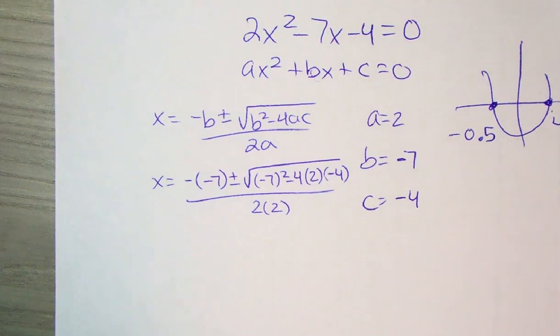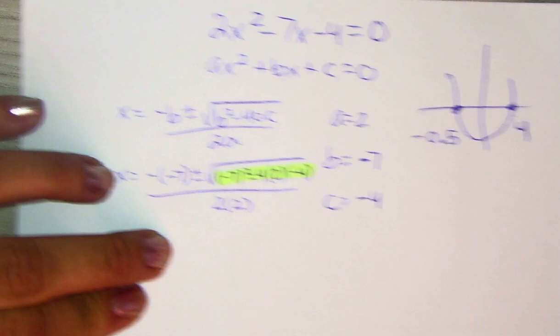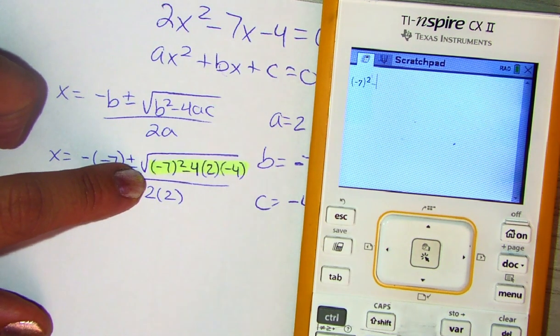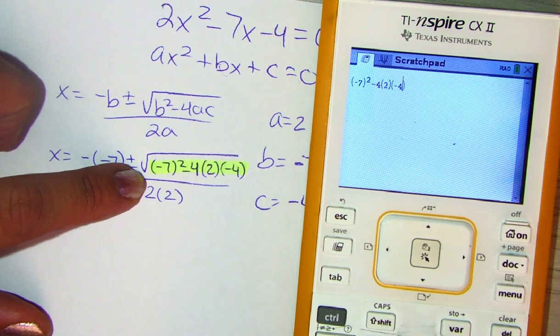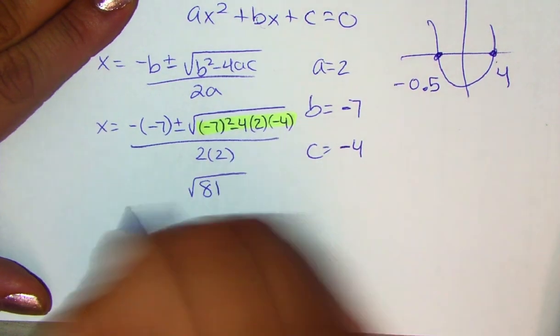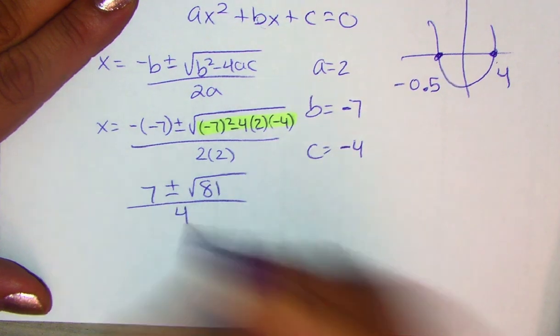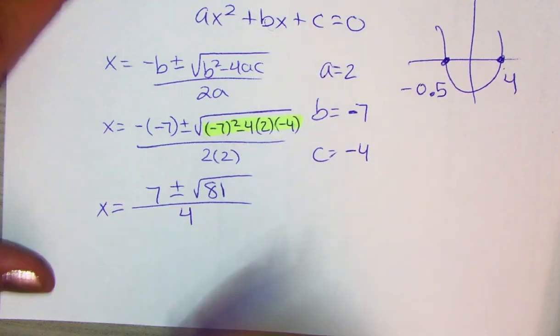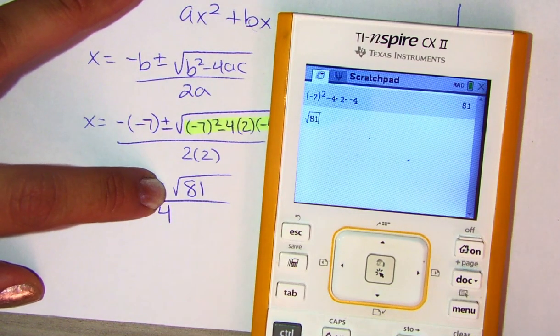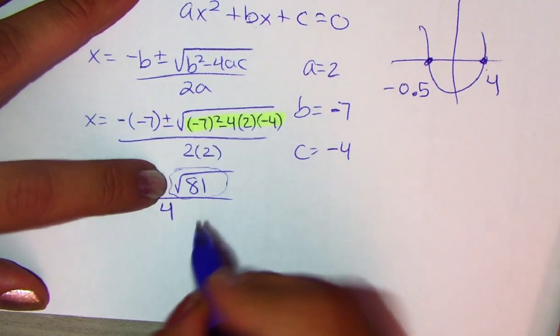And from here, we focus on simplifying that discriminant, b squared minus 4ac. So let's use the calculator for that. We're going to type negative 7 squared minus 4 times 2 times negative 4. And that's 81. So we're going to write the square root of 81, negative times negative is positive, and 2 times 2 is 4. If we check the square root of 81, it gives us 9 as an answer.